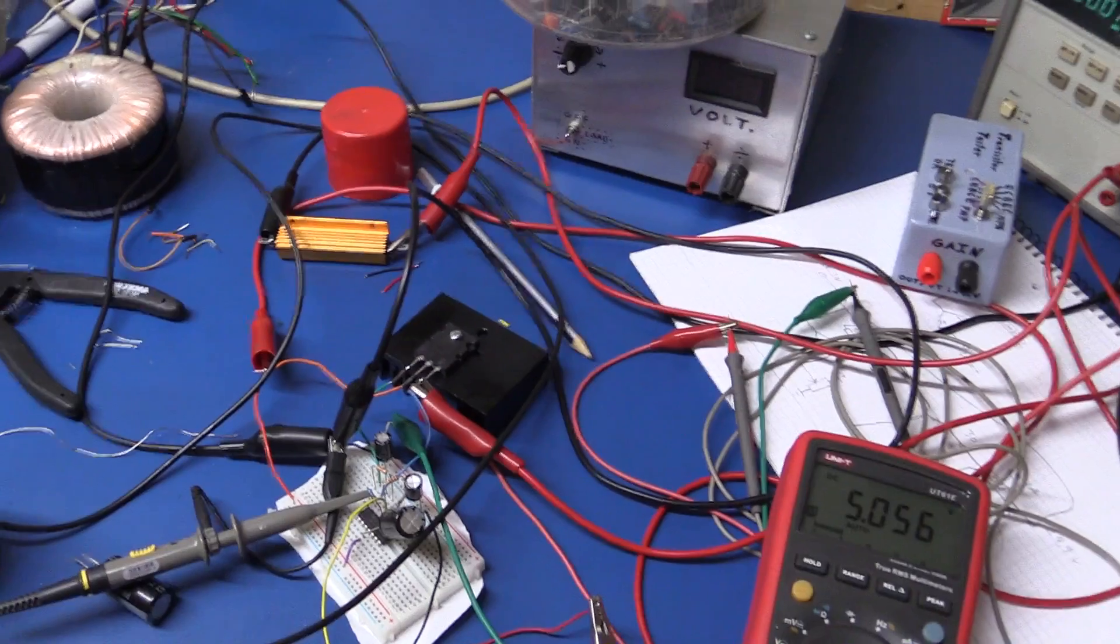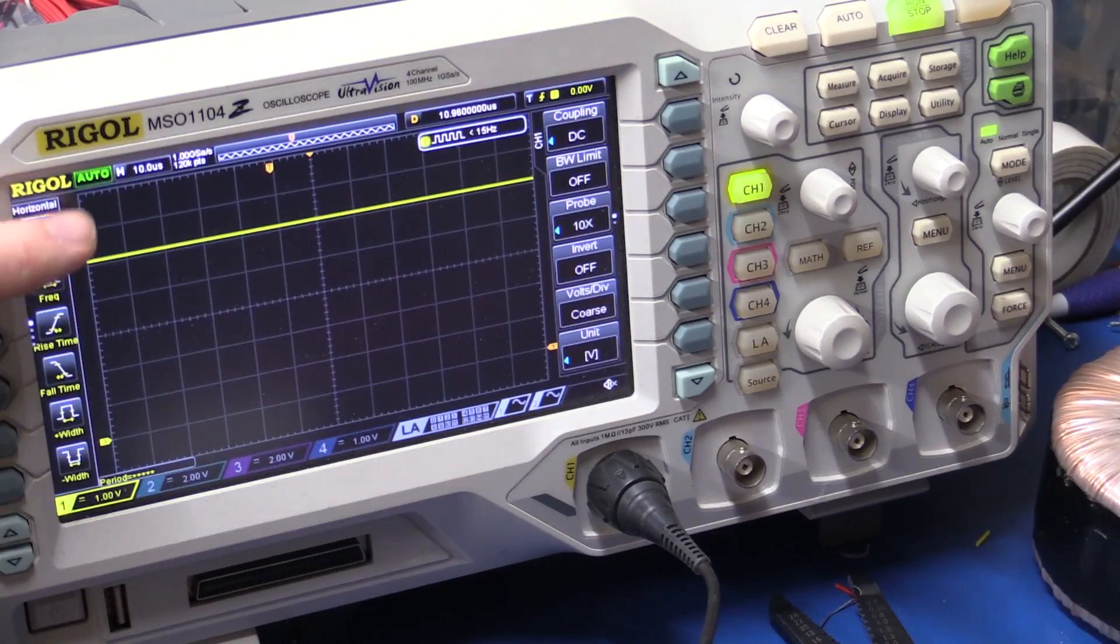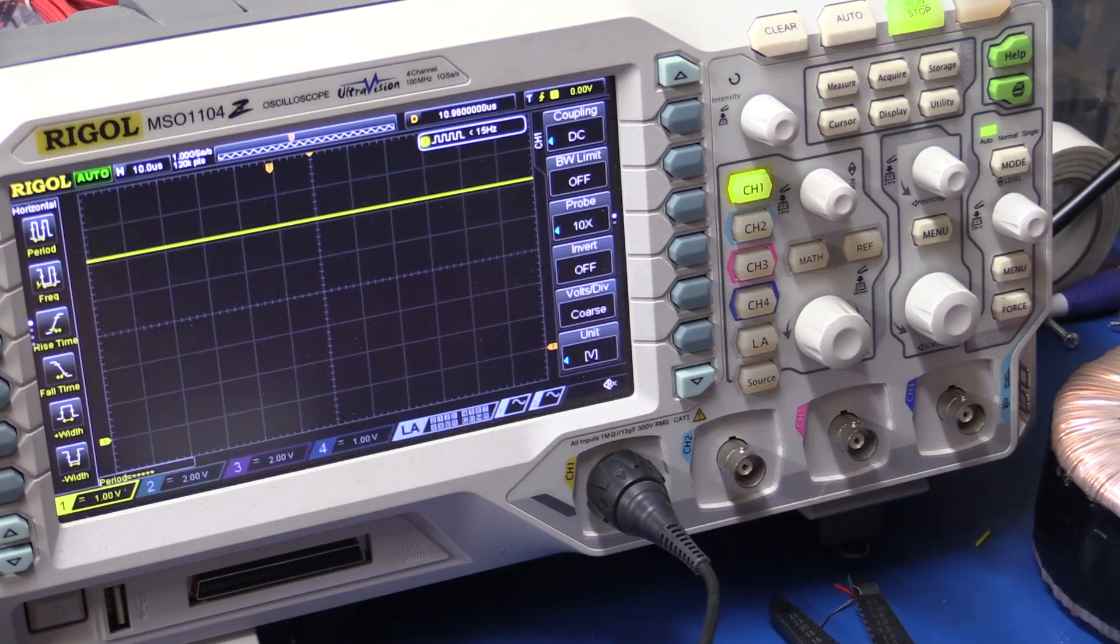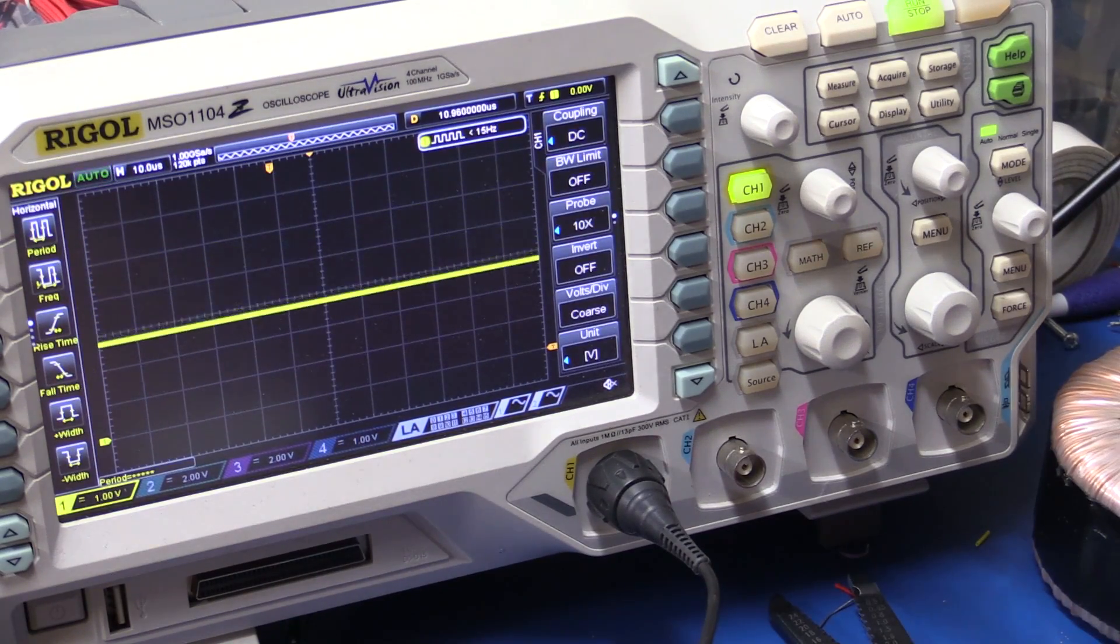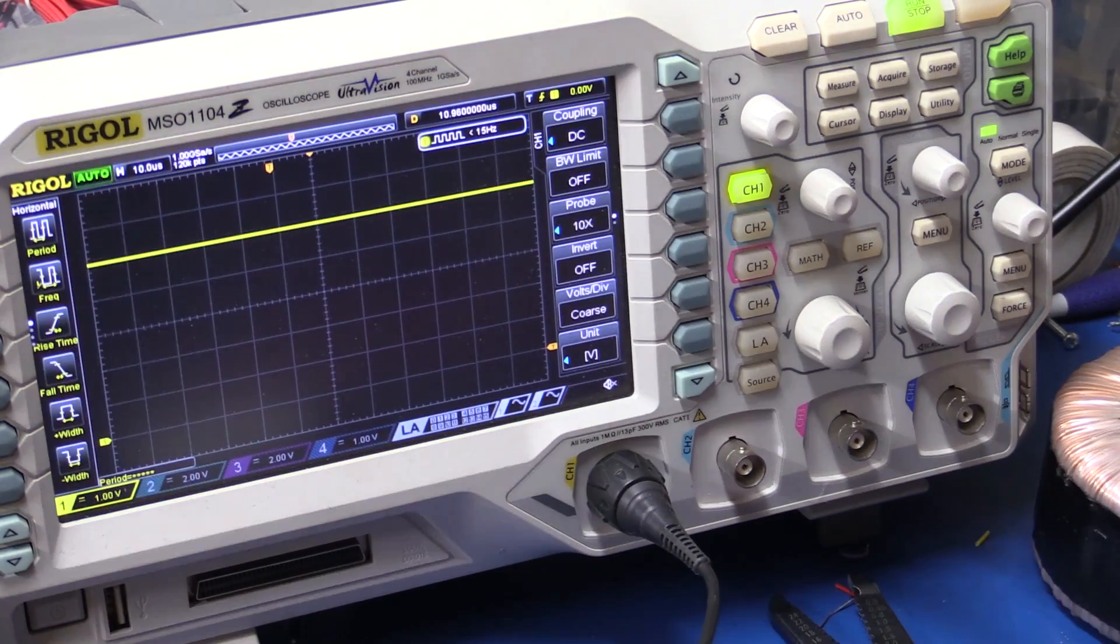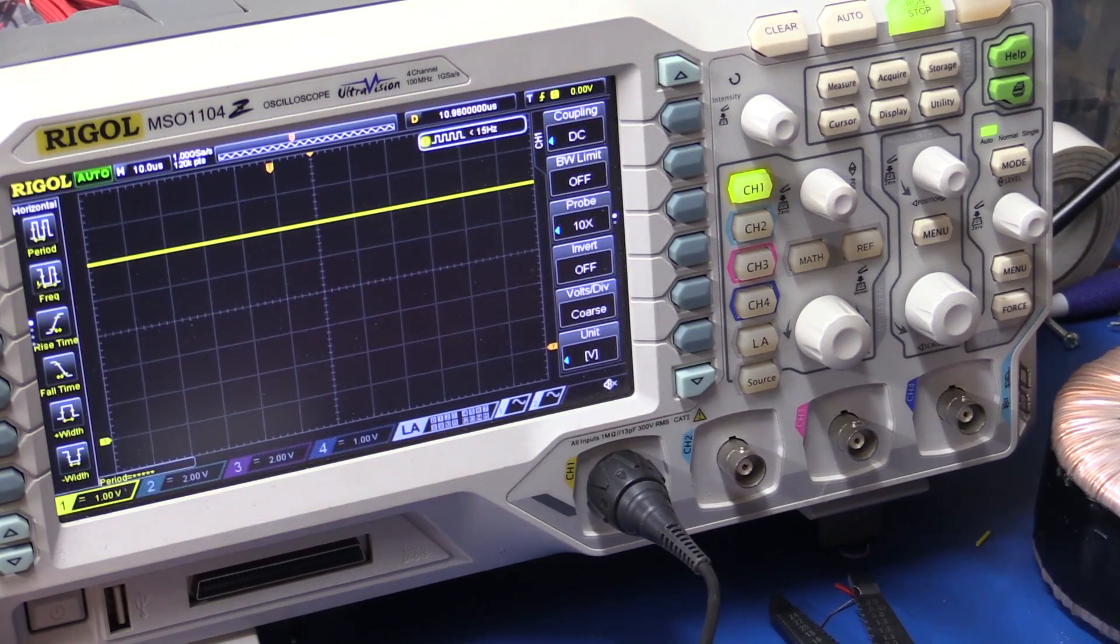I also hooked up the oscilloscope. Here we can see that it is a nice and stable 5 volts and we can adjust it. So at least this part of the circuit seems to work.